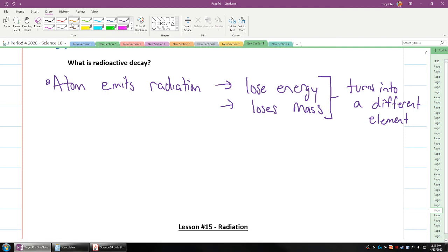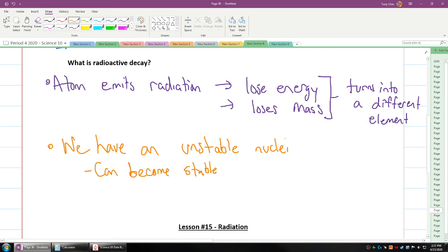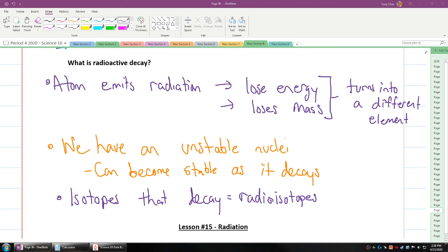Now, why does this occur? It occurs because we have an unstable nuclei. And this nuclei can become stable when it decays. So it can become stable as it decays. And we call these nuclei's, these isotopes that decay, we call them radioisotopes. Because we're going to learn a phrase, we're going to have parent isotopes and daughter isotopes when we get to decay.